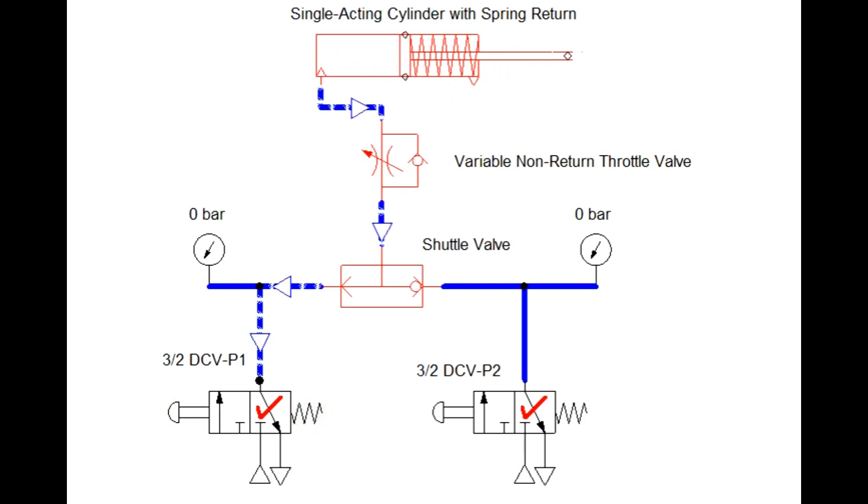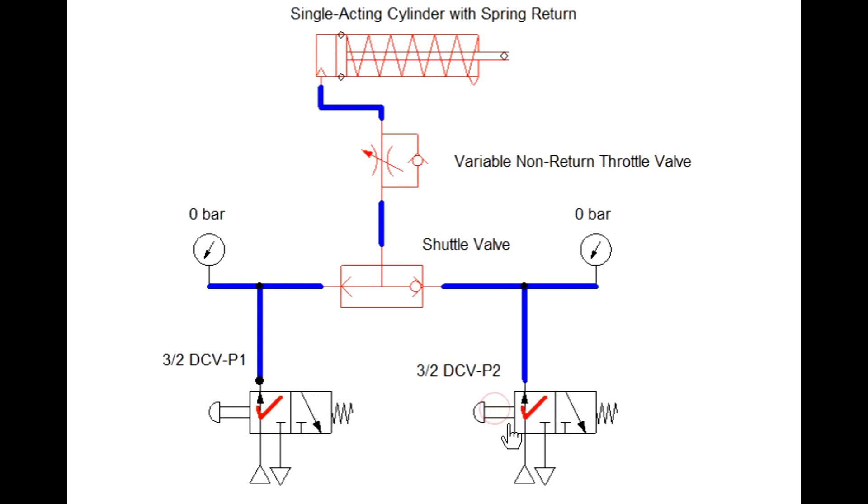Fluid is transferred to the single acting cylinder and cylinder starts to extend. Let us see the working of the circuit. If I actuate the first position, path gets open for that valve and cylinder starts to extend.